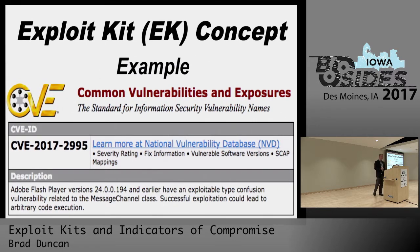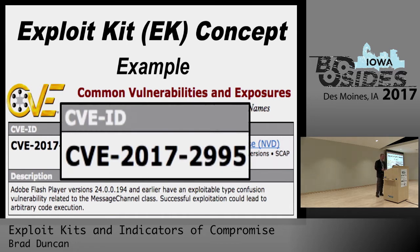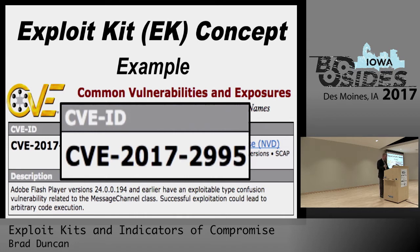Vulnerabilities are generally cataloged by CVE number — Common Vulnerabilities and Exposures Database. This one is CVE-2017-2995. It's only April and we're already well over 3,000 vulnerabilities cataloged this year alone. This one's about Adobe Flash Player version 24.0.0.194. I love these definitions because they say 'successful exploitation could lead to arbitrary code execution.' There's nothing arbitrary about the code executed — they should say malicious code execution, but they say arbitrary.